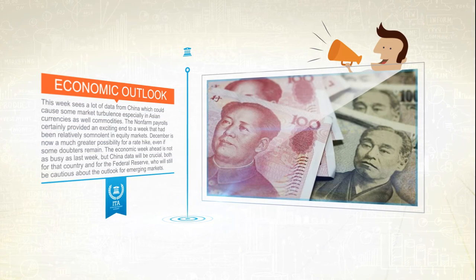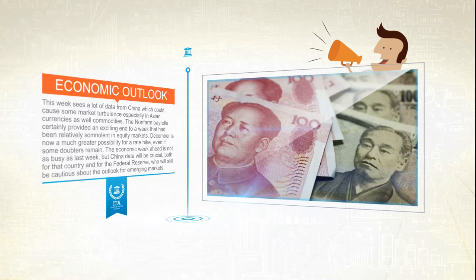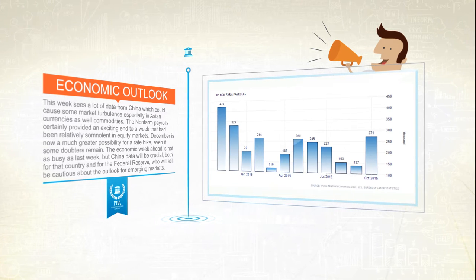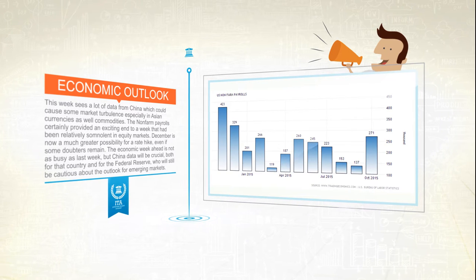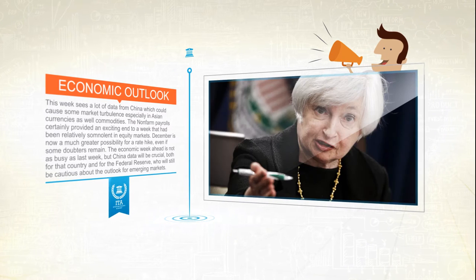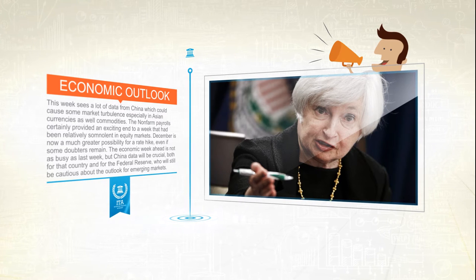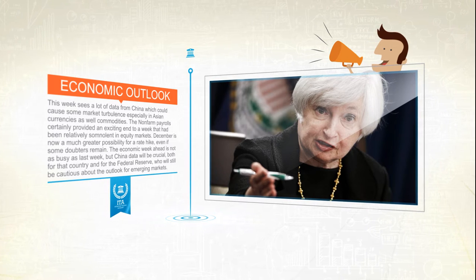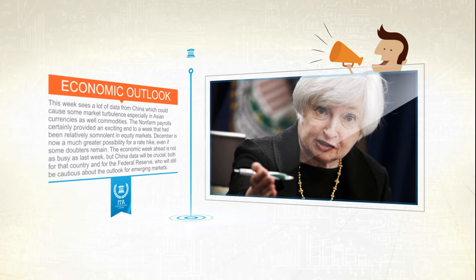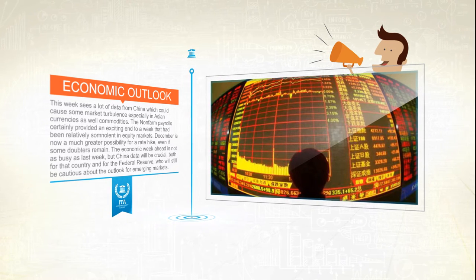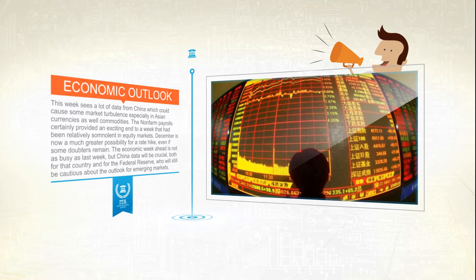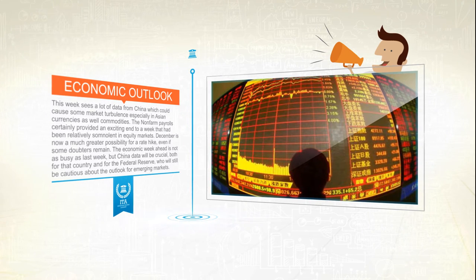This week sees a lot of data from China which could cause some market turbulence, especially in Asian currencies as well as commodities. The non-farm payroll certainly provided an exciting end to a week that had been relatively somnolent in the equity markets. December is now a much greater possibility for a rate hike even if some doubters remain. The economic week ahead is not as busy as last week, but China data will be crucial both for the country and for the Federal Reserve, who will still be cautious about the outlook for emerging markets.